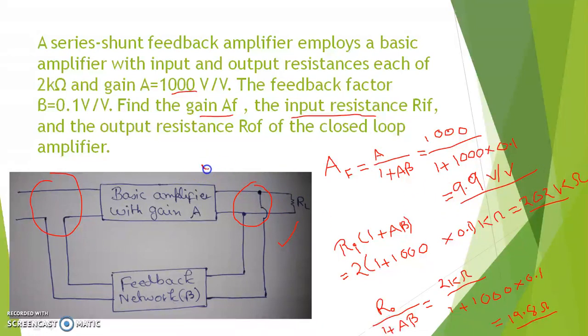So, the idea is very simple. To solve this type of numericals, first draw the feedback topology. Then, if anything is in series connection, multiply that impedance by 1 plus A β and if it is in shunt connection, divide that by 1 plus A β. This is how you have to solve this type of numericals. I will show more examples in my next videos. This is all for my this video. Thank you for watching.